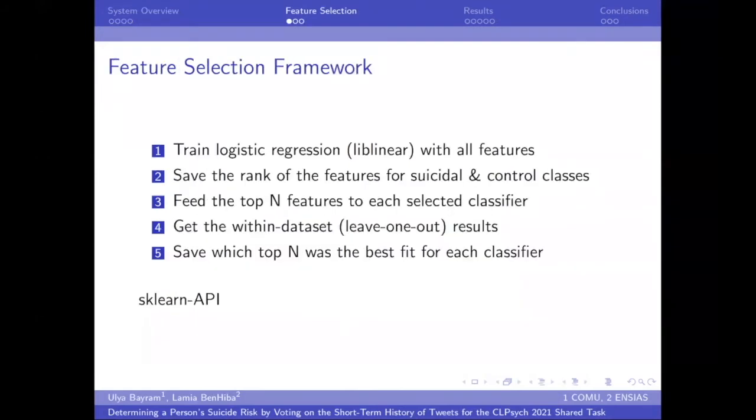And for feature selection framework, we applied these five steps. We selected feature selection because we thought features usually contain a lot of noise and the presence of noise might negatively affect many supervised classifiers.